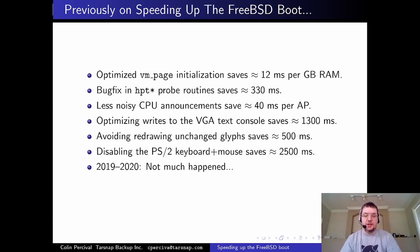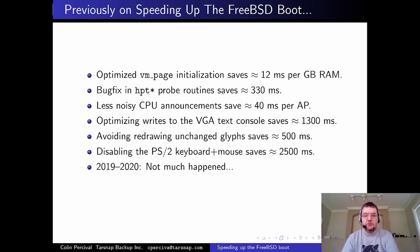The HPT drivers were spending a long time in their probe routines — it was a bug; they were doing things in probe that should have been in attach. A new driver cut out 330 milliseconds. Also, every time a new CPU was attached during boot, it would announce its presence with a full console line, costing about 40 milliseconds per CPU. We changed this to print all CPU numbers on one line, saving 40ms per CPU.